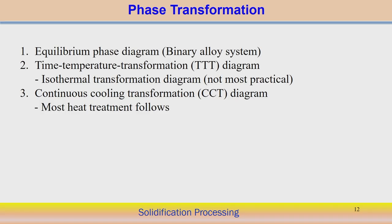There are three different types of phase diagrams: one is the equilibrium phase diagram for a binary alloy system; second is the time-temperature transformation diagram, usually called the TTT diagram; and third is the continuous cooling transformation diagram, the CCT diagram. We know all about these different types of phase transformation and their graphical representations under different conditions.